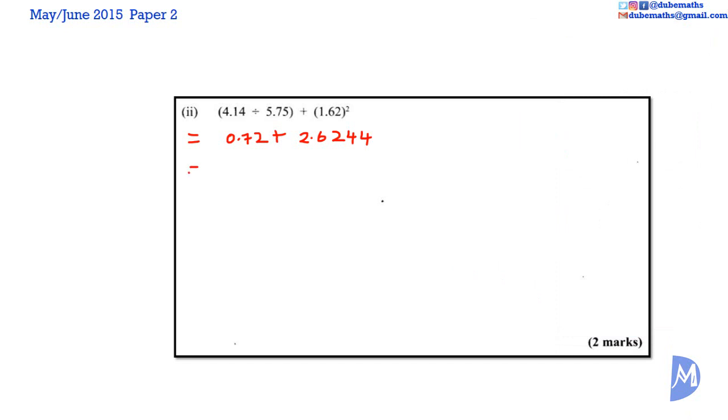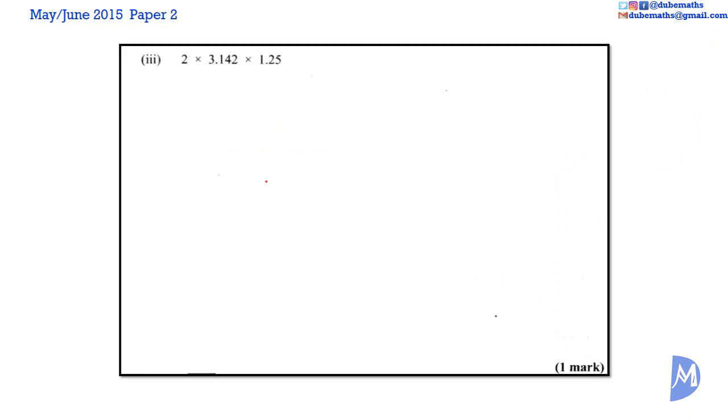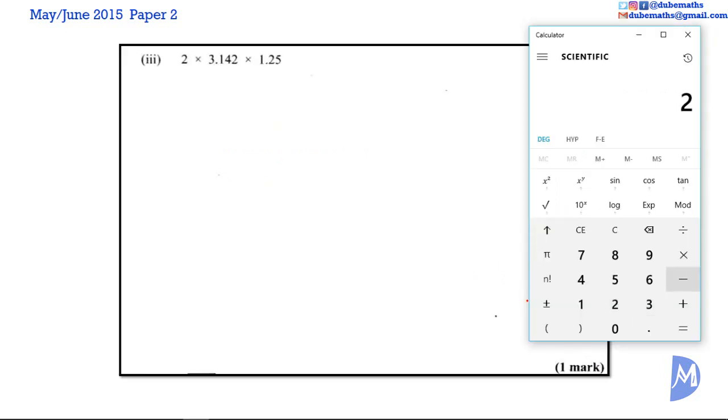Part 3. 2 multiplied by 3.142 multiplied by 1.25 is equal to 7.855.